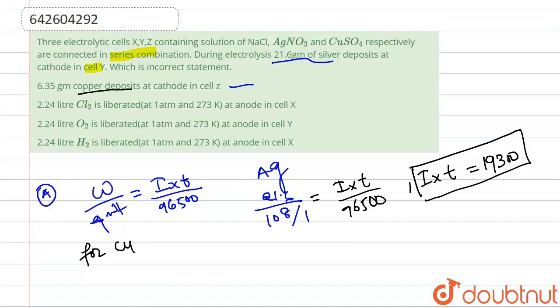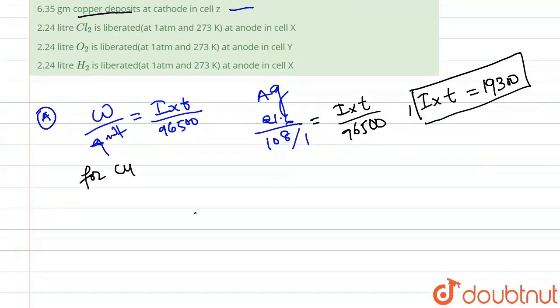For copper, we will take the weight as w upon 63.5 equivalent weight divided by its n factor which is 2. So it is equal to 19300, which is the value of i into t, upon 96500.